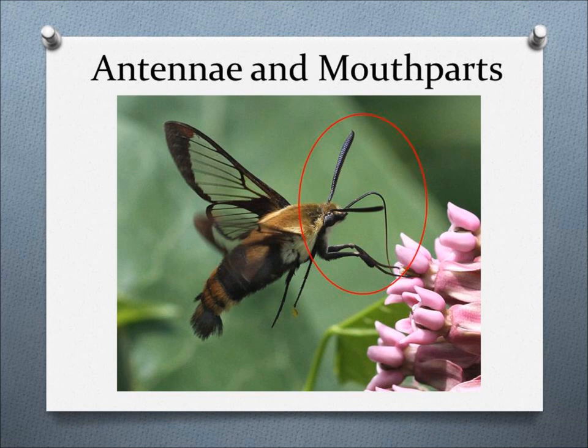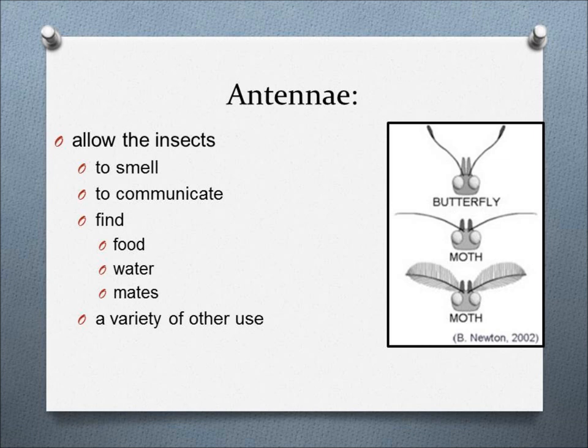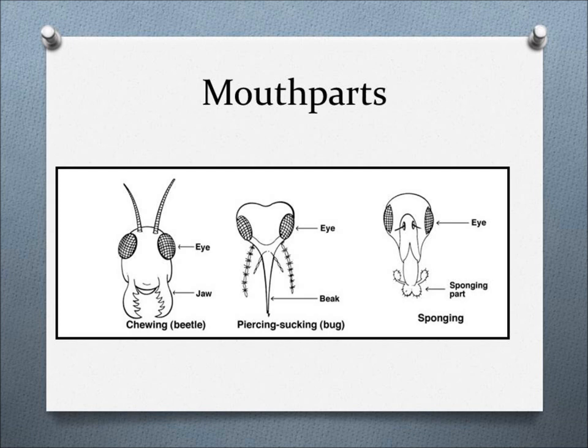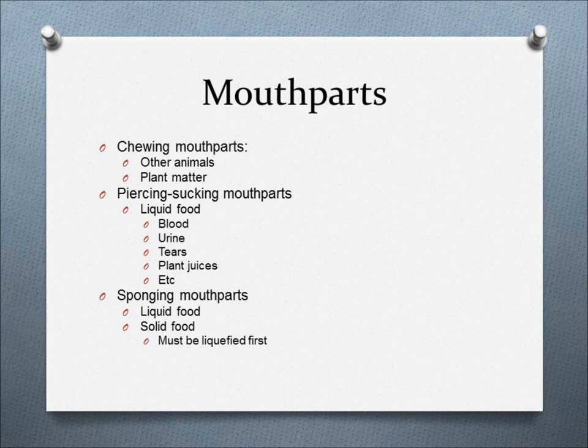Insects also have their antennae and mouthparts on their heads. The antennae, the feathery component that all insects have, allow the insects to smell, communicate, find food, water, and mates, and also have a variety of other uses. Insects have one of three mouthparts. The mouthparts — chewing, sucking, and sponging — are one of the ways that insects are identified. An insect's diet depends on the type of mouthpart it has. Let's focus on each type of mouthpart individually.